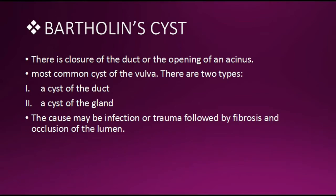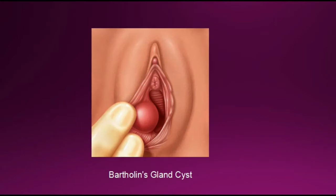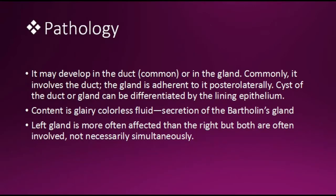Now, Bartholin's cyst: there is closure of the duct or the opening of an acinus. It is the most common cyst of the vulva. There are two types: a cyst of the duct and a cyst of the gland. The cause may be infection or trauma followed by fibrosis and occlusion of the lumen. Here you can see a picture of Bartholin's gland cyst — the Bartholin's glands are swollen. The pathology may develop in the duct, which is more common, or in the gland. A cyst of the duct or gland can be differentiated by the lining epithelium.